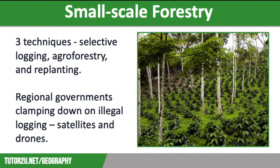Not chopping down the rainforest is the best solution for the planet. However, it is not a particularly realistic one. So therefore, small scale forestry has to be part of any sustainable management solution for the rainforest. There are three small scale forestry techniques that help to manage the tropical rainforest in a sustainable way. Firstly, we have selective logging.